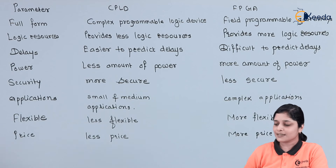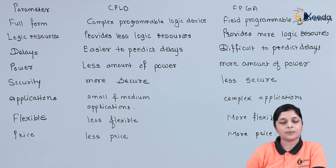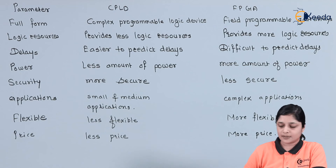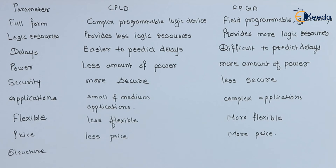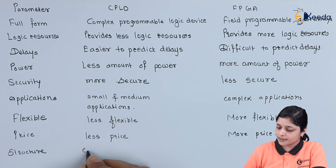To design an FPGA circuit — Field Programmable Gate Array circuits — the price required is more than CPLD, meaning they are costlier than CPLDs. One more point: the structure of CPLD consists of PLDs.